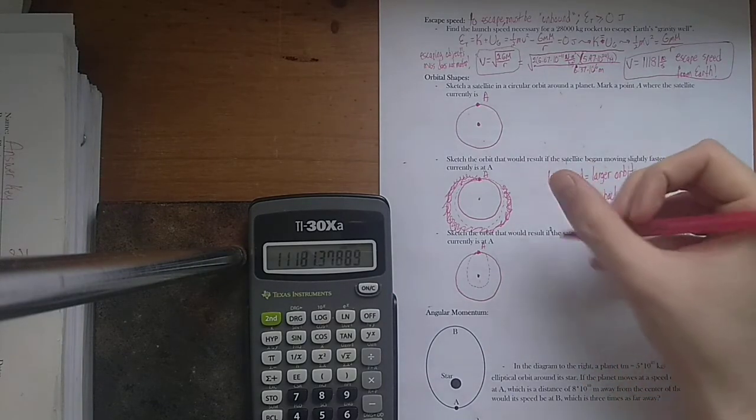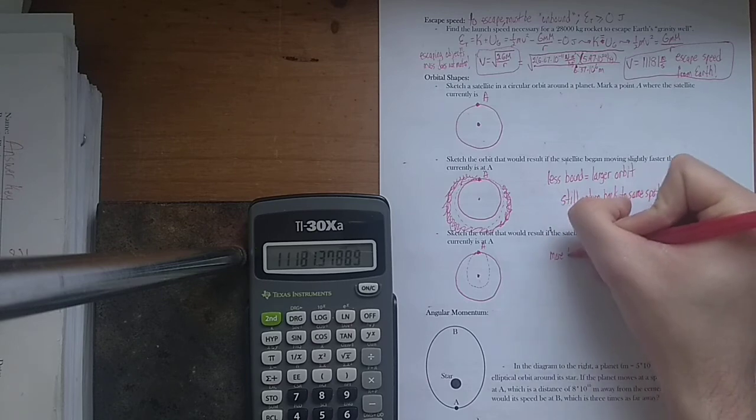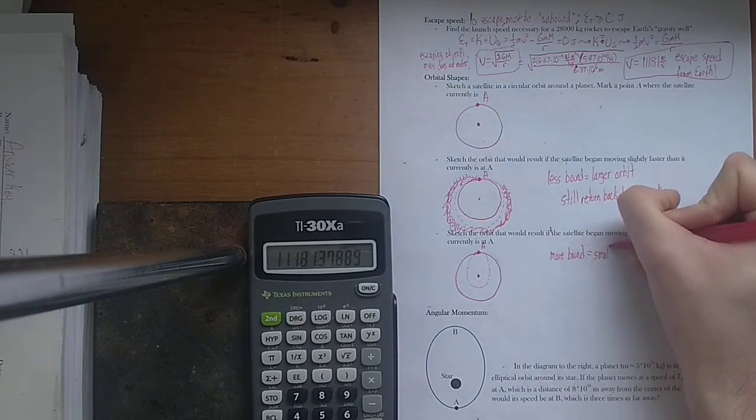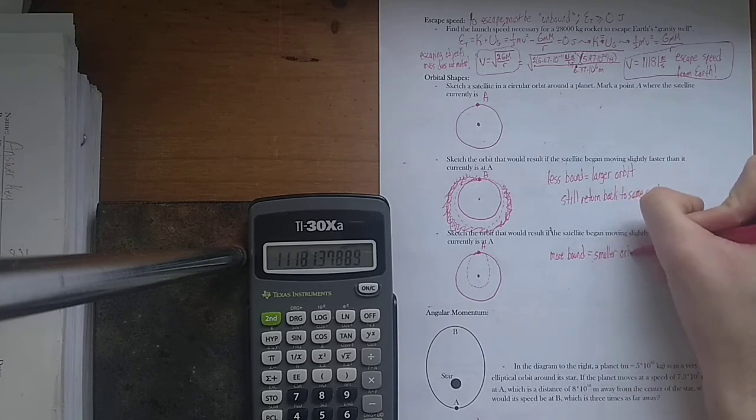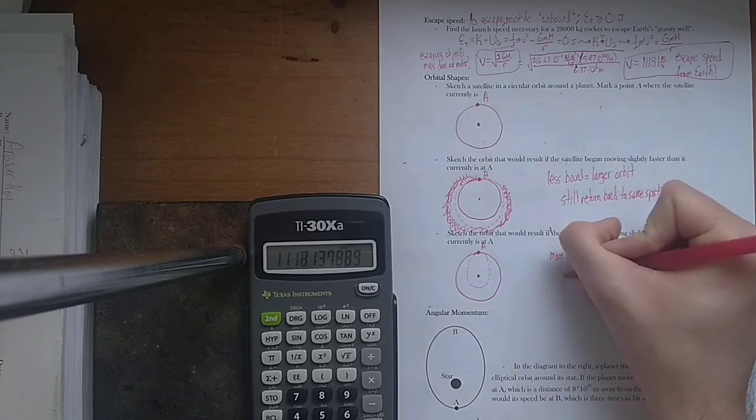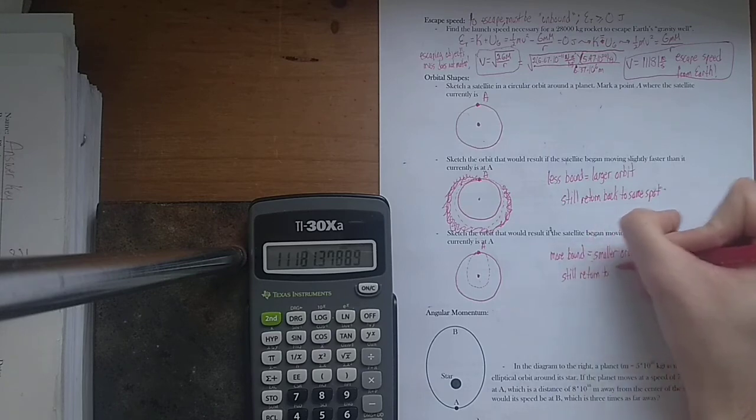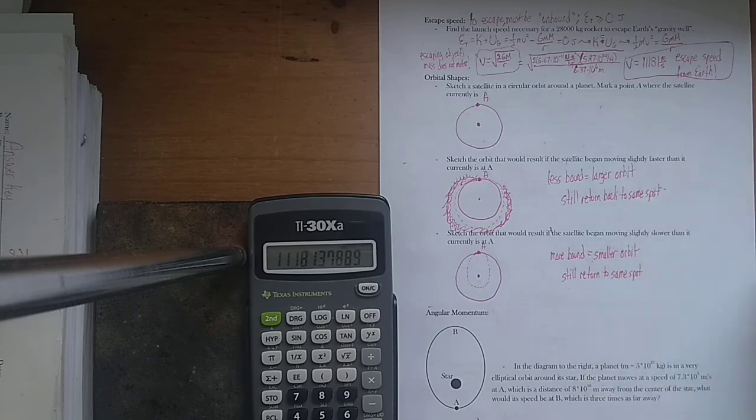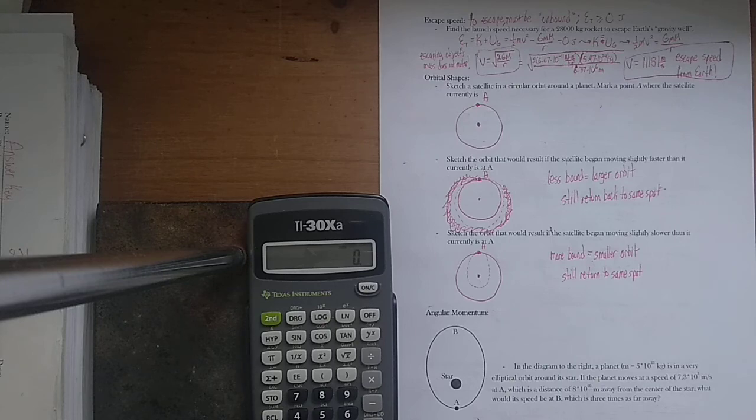But, with this orbital maneuver, you are now more bound, meaning you have a smaller orbit. But, again, you still return to the same spot. I'm going to stop there before we get to angular momentum. I'll take a few minutes to talk about that in the next video, and then we'll be done with the gravitation notes.